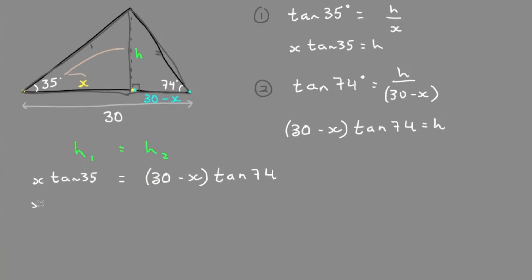So solving for this, you want to distribute the tan 74 into the brackets on both of them, so we have 30 tan 74 minus x tan 74. We can evaluate these tans on the calculator. So tan of 35 is 0.7x equals 104.6 minus x times tan of 74, which is 3.5x.